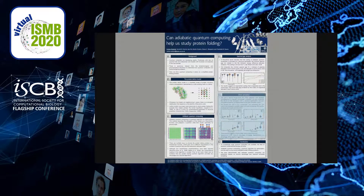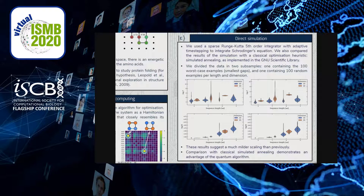We then considered a direct simulation of the problem. We used a Runge-Kutta method to directly integrate the Schrödinger equation and simulate the exact time it would take to solve the problem with a quantum computer. Since this is computationally expensive, we considered two different samples: one with the worst-case gaps and one with 100 random examples per size and dimension. We observed barely any difference between these two samples, and in fact the results are a lot milder than previously forecasted, with a scaling involving one or two orders of magnitude at most between 4 and 9 amino acids. More importantly, when compared with classical simulated annealing, we see an important advantage.